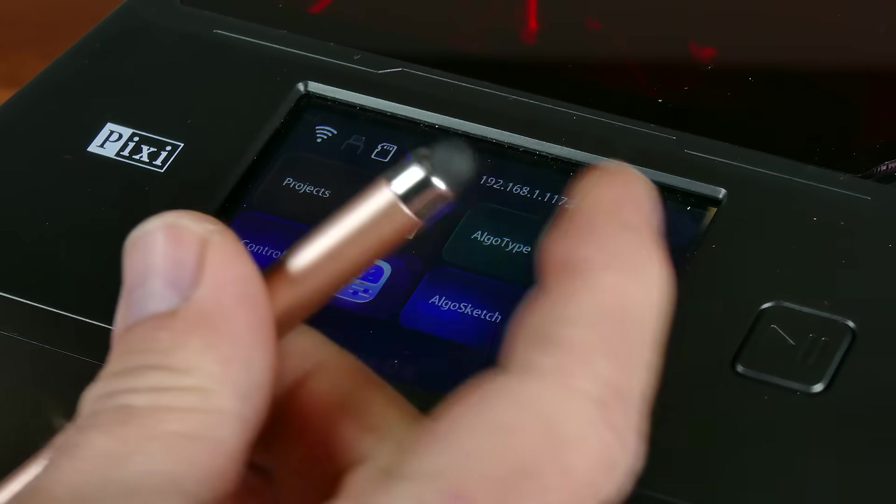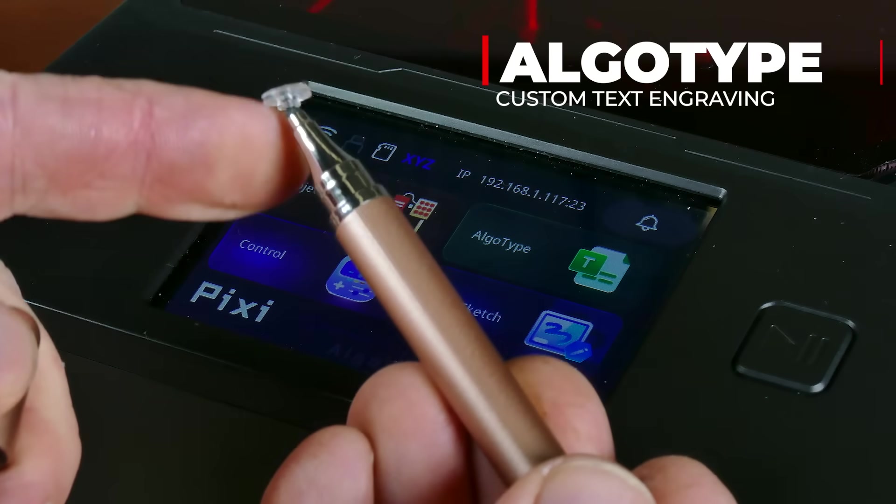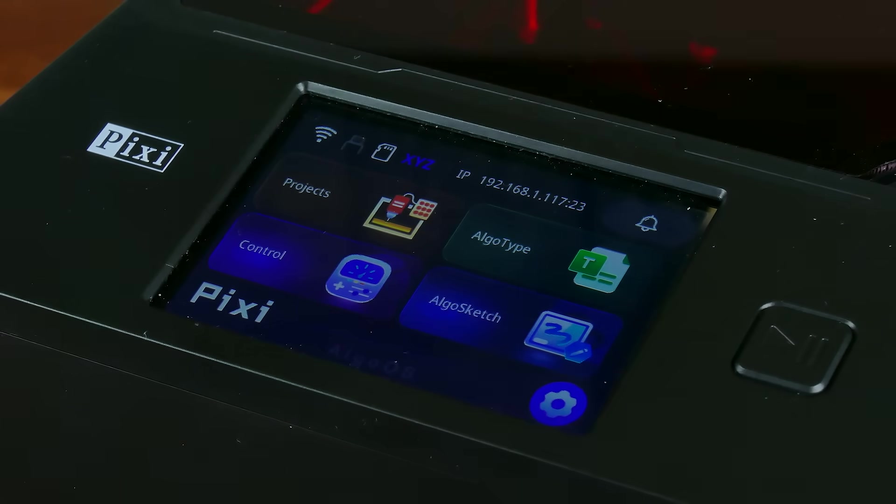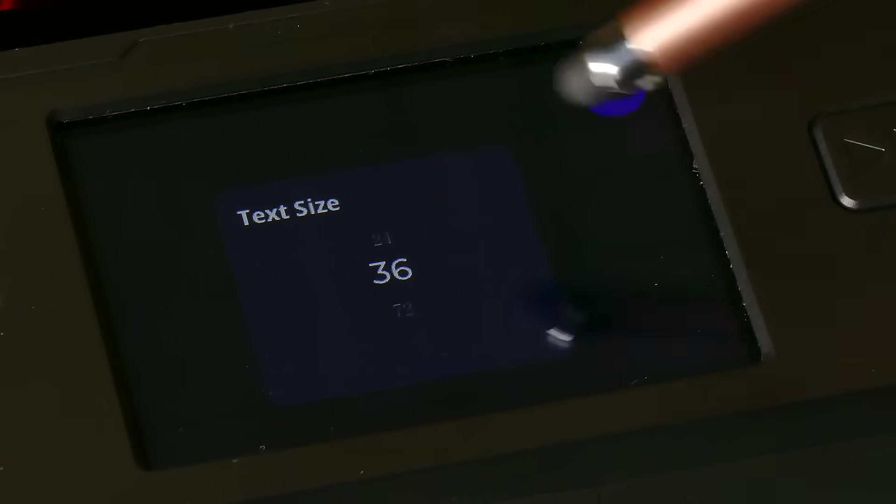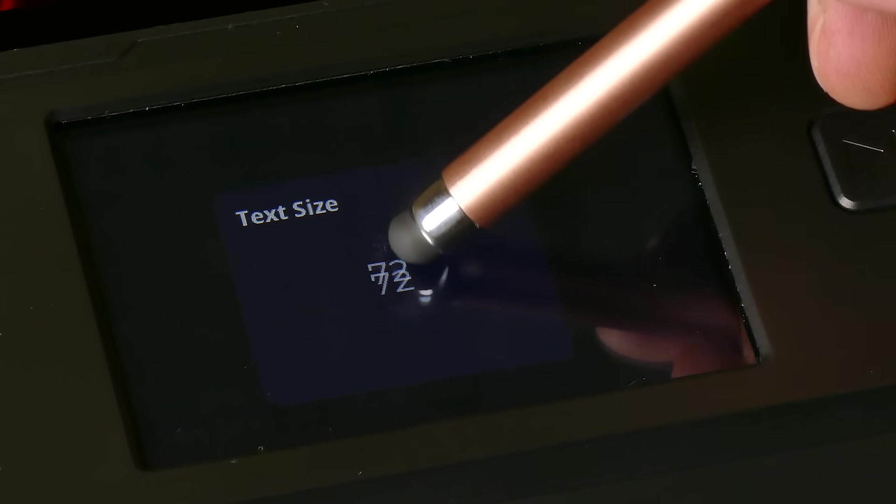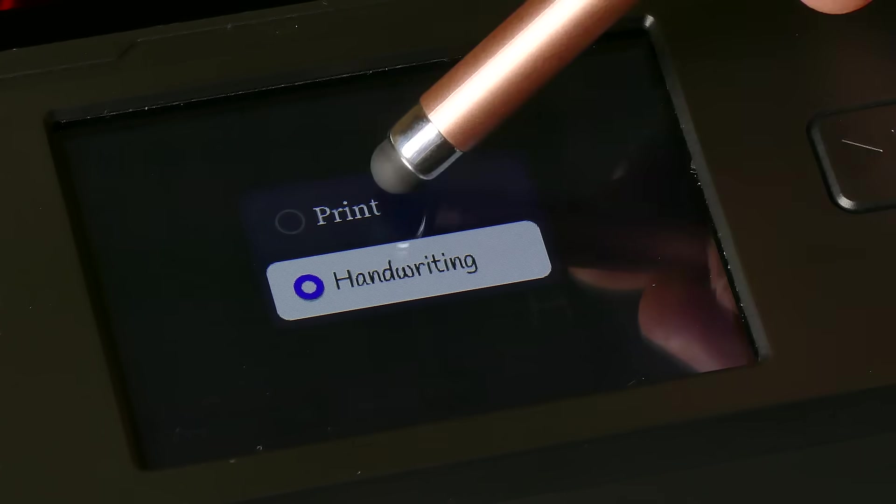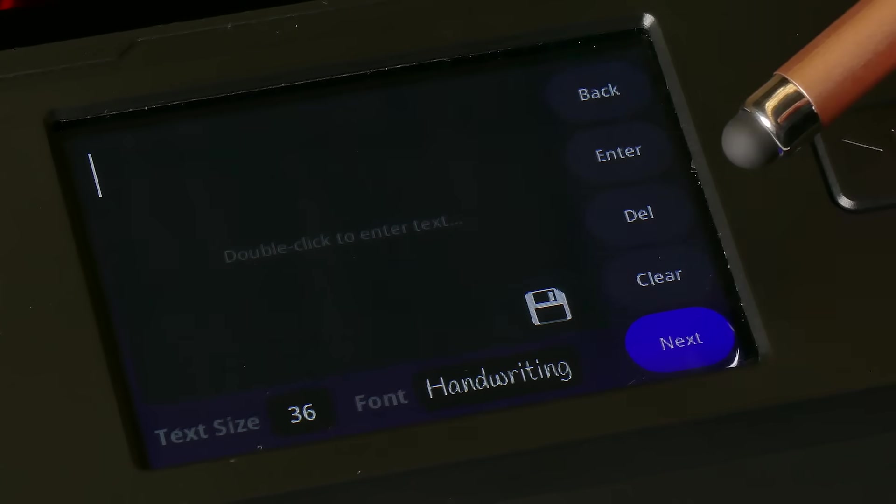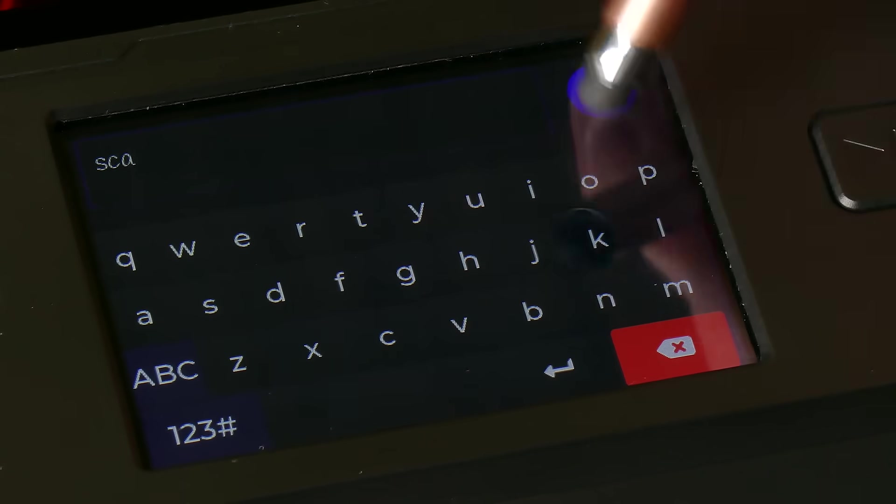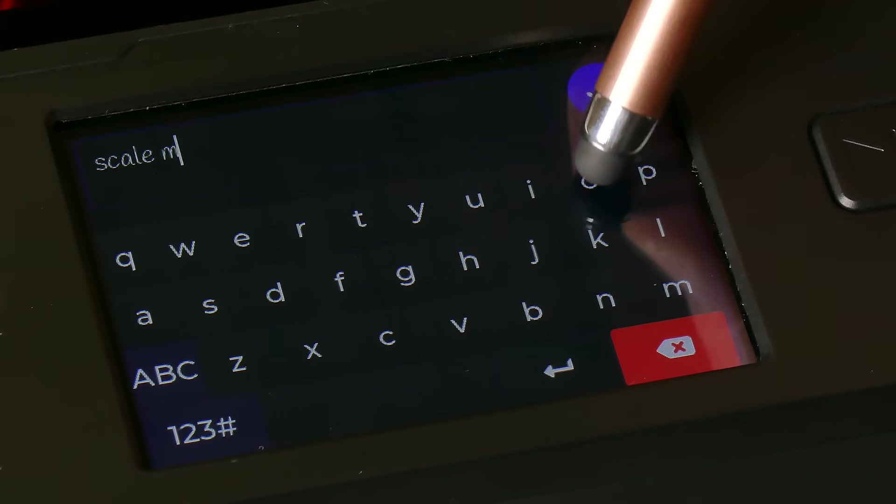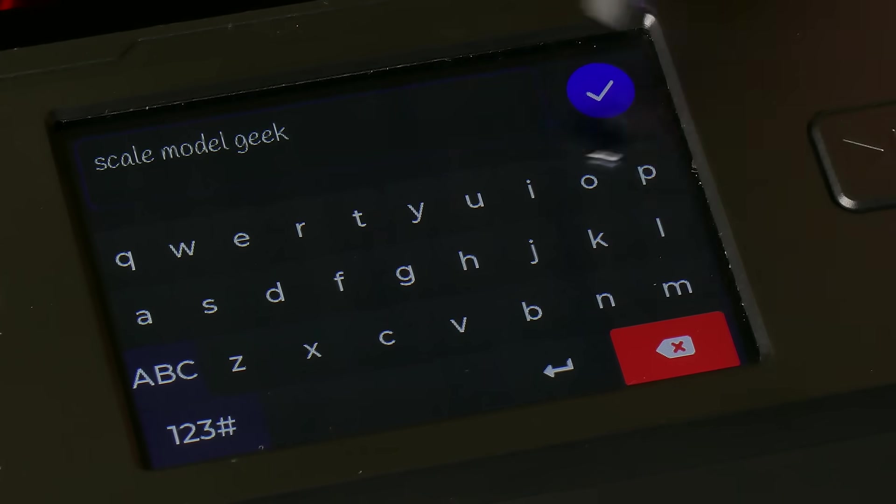Let's check out another feature that this unit has, which is called the Algo Type. Using this double-ended stylus, we can directly input some information into the screen. Now you click on the little icon, then you can pick your size of the font and there are five different sizes. Once you select that, you can then pick a type of style that you want. You can either have handwriting or print. I'm going to go with the handwriting and you can then directly type in the text that you wish to engrave straight into the screen there, and of course I'm just going to type out Scale Model Geek there.